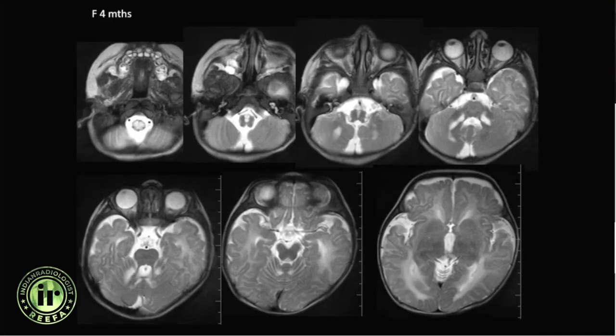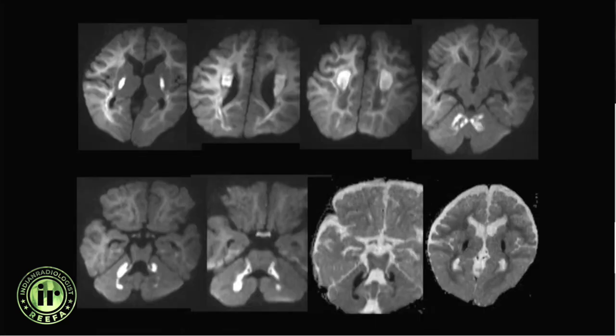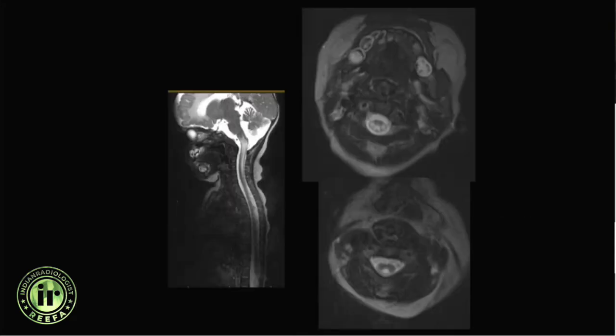Another patient with diffuse periventricular signal abnormality also had abnormality in the brainstem, upper spinal cord, and cerebellar hemispheres, with restricted diffusion seen in the periventricular regions. There was also diffuse long-segment spinal cord involvement. This was diagnosed as mitochondrial complex one deficiency.